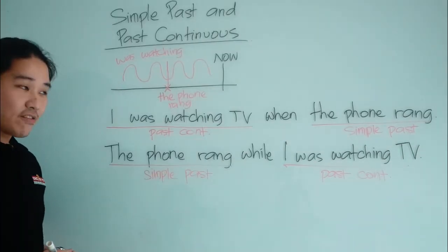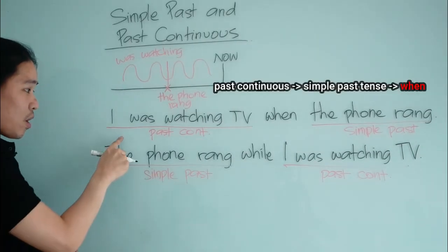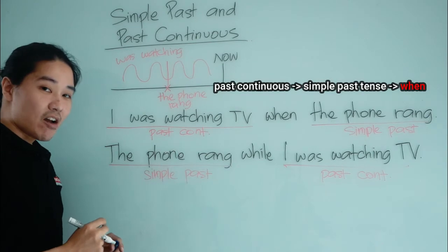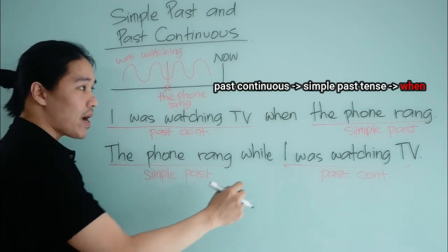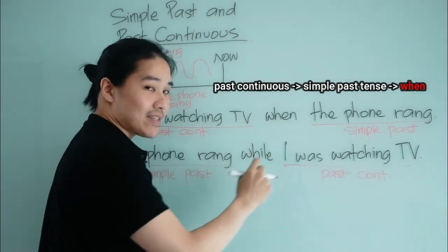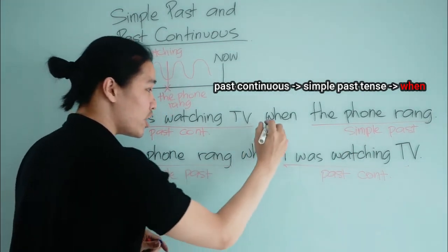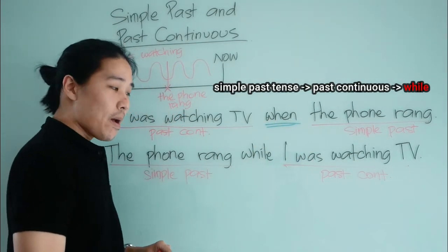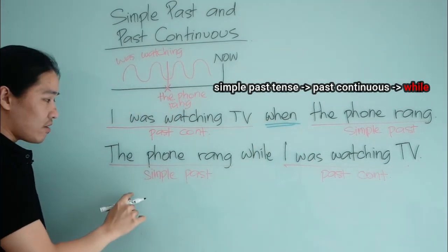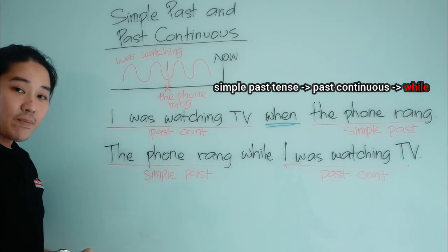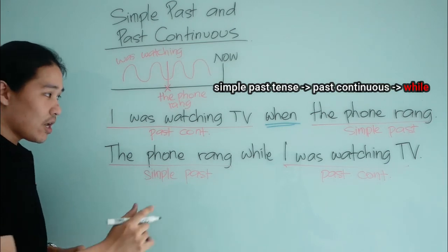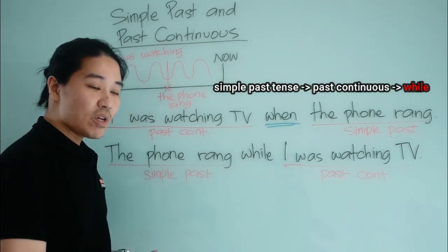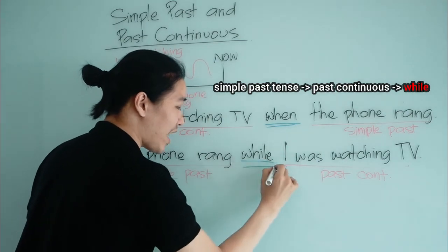If you notice the difference — when the past continuous is at the beginning of the sentence followed by a simple past tense, we use the word 'when.' But when the first part of the sentence is a simple past followed by a past continuous, we use the word 'while.'